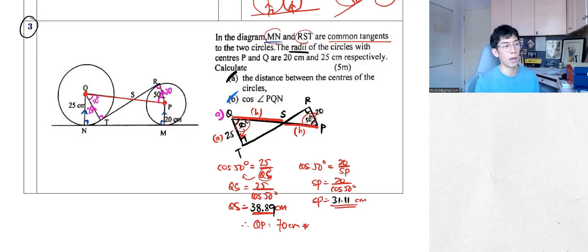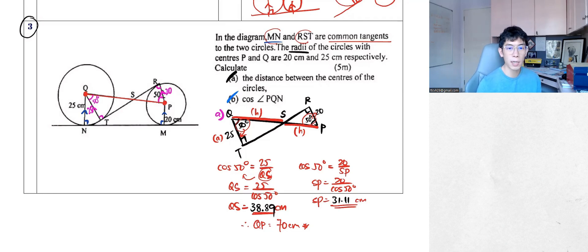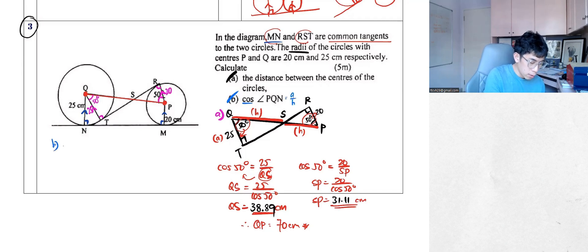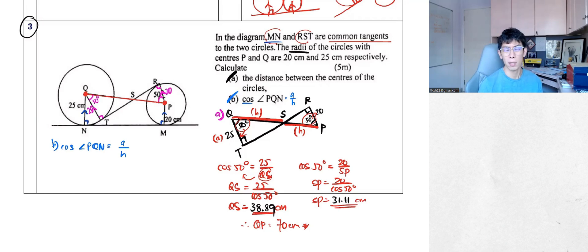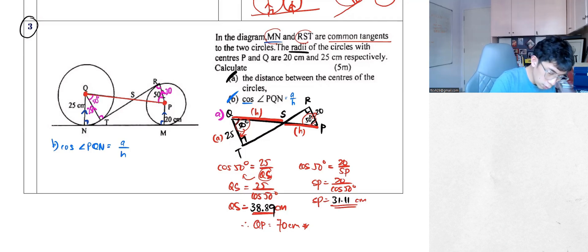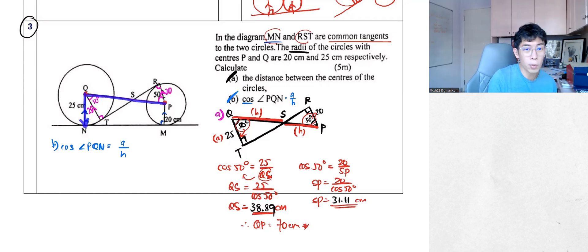For part (b), cos means A over H format. So cos angle PQN is supposed to be adjacent over hypotenuse. What is my adjacent and what is my hypotenuse? But first — if they talk about SOH CAH TOA, you need a right angle triangle. But do you actually have a right angle triangle for PQN? Let's check: P up to Q, then down to N — is that a right angle triangle?